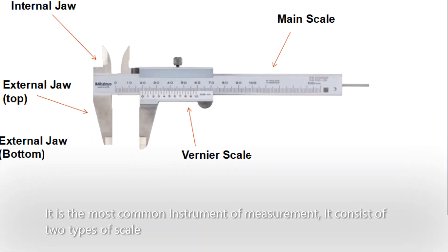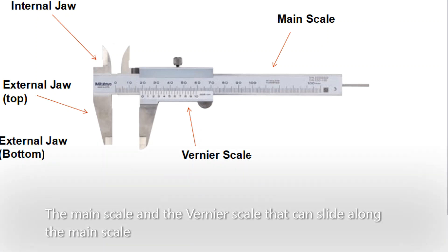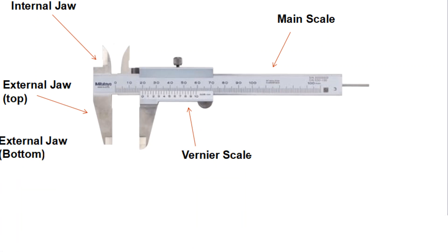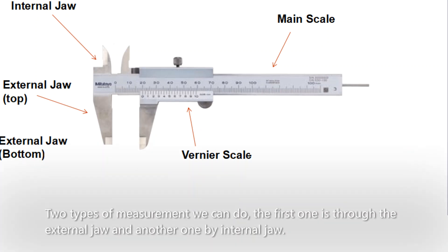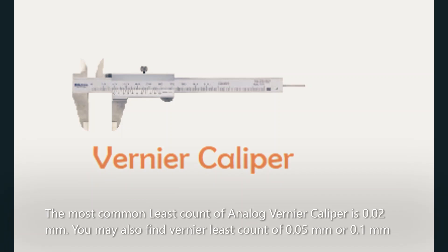The Analog Vernier Caliper is the most common instrument of measurement. It consists of two types of scales: the main scale and the Vernier scale that can slide along the main scale. The measurement can be carried out in two ways — through the external jaw, which measures external dimensions, and through the internal jaw, which measures internal dimensions. The most common least count of Analog Vernier Caliper is 0.02 mm.